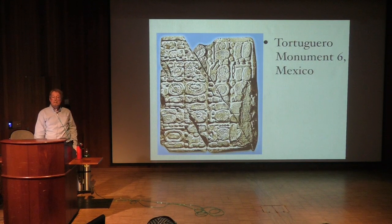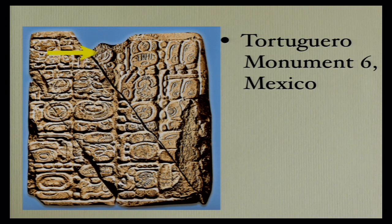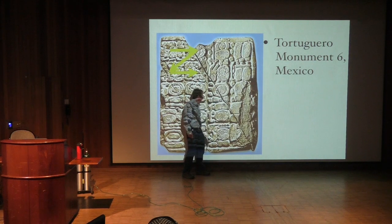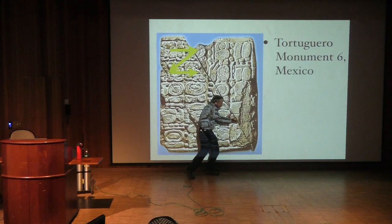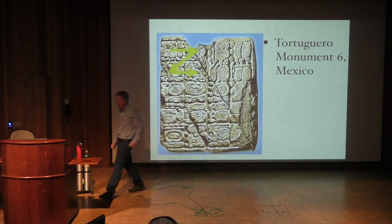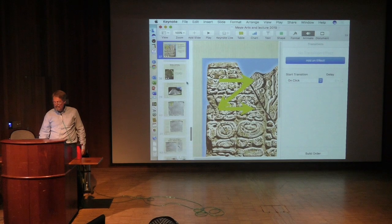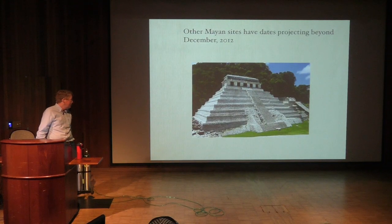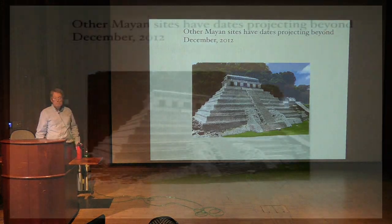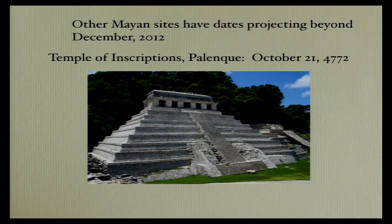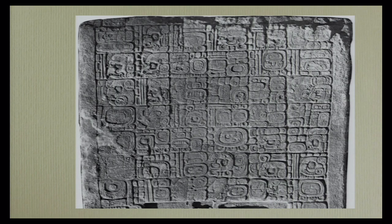This is the inspiration for the apocalypse: Tortuguero Monument 6 in Mexico. We read Maya monuments in two columns, going across and down like a newspaper. If we start here, we see 'completion of 13 baktuns, 4 Ahau, 3 Kankin' — and then the rest is broken. It doesn't say end of the world, and yet that's what people interpreted it to mean. There were plenty of Maya sites with dates much later than December 2012 — for example, the Temple of Inscriptions has a date projecting far beyond December 2012 and beyond today. So they didn't think the world was going to end.